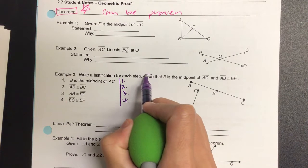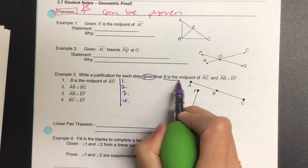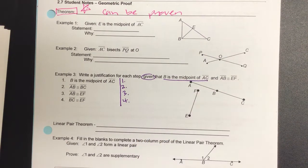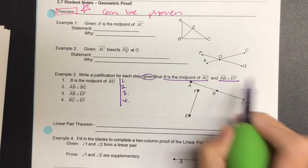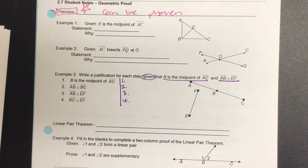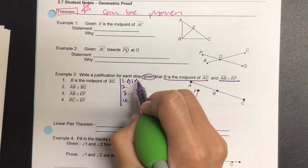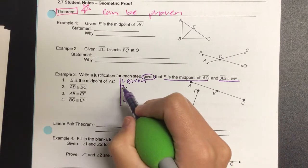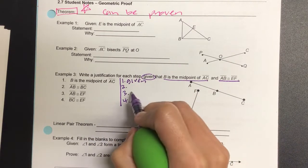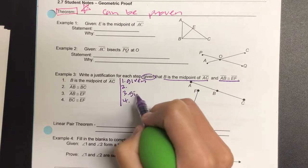Okay, so they gave us how many givens? B is a midpoint of AC, that's the first given. What else? AB is congruent to EF. So I can go to that corresponding reason and write out 'given' next to it. So here's my given. And then is my given on the second, third, or fourth? The third. So really, in the end, we have to figure out the other two.